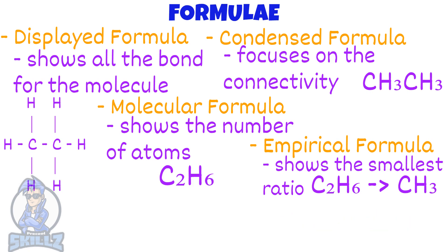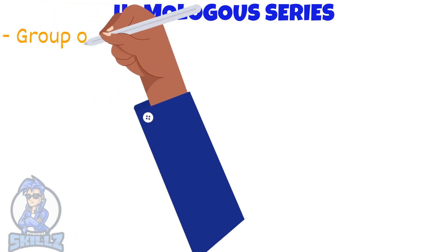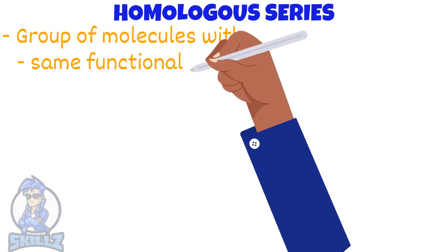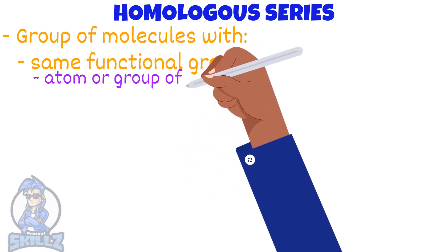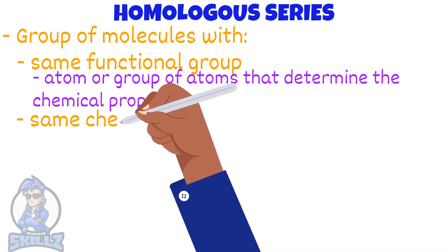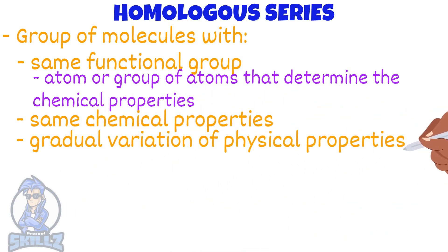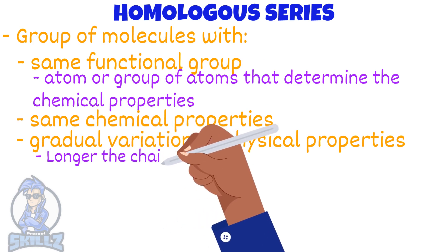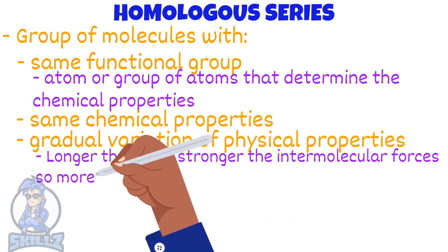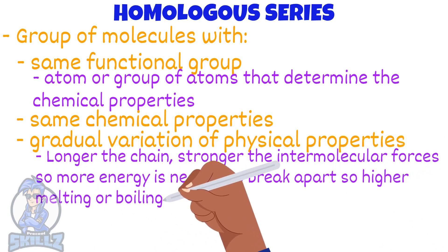The last method for formula is general formula. But before we talk about that, you should know what a homologous series is. A homologous series is a group of molecules with the same functional group, which is an atom or group of atoms that determine the chemical properties of a compound. They share the same chemical properties and gradual variation of physical properties, meaning when the chain length increases, the strength of the intermolecular forces increases, so more energy is needed to break them apart. This leads to higher melting and boiling points.